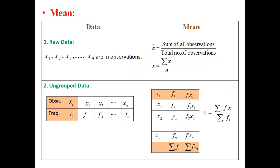For raw data, the mean x̄ is equal to the sum of all observations divided by the total number of observations. That means x̄ = Σxᵢ / n. For ungrouped data, we prepare a table with the first column for the observation xᵢ, the second column for the frequency fᵢ, and the third column for fᵢ × xᵢ. At the end, take the sum: Σfᵢ and Σfᵢxᵢ. So the mean for ungrouped data is x̄ = Σfᵢxᵢ / Σfᵢ.